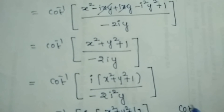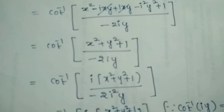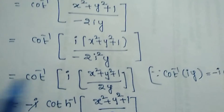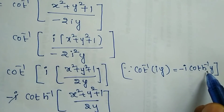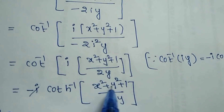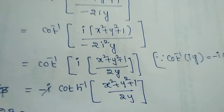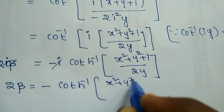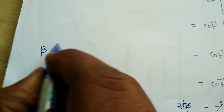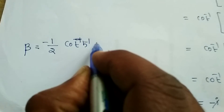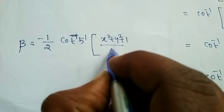This is now in the form of cot inverse of i times y. Using the formula: cot of i y equals minus i coth y, we substitute to get minus i times coth inverse of x squared plus y squared plus 1 over 2y. Then 2 beta equals minus coth inverse of x squared plus y squared plus 1 over 2y, so beta equals minus one half times coth inverse of x squared plus y squared plus 1 over 2y.